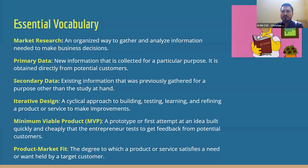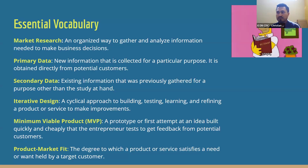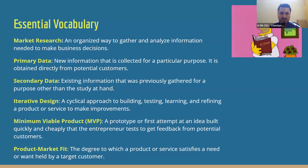First and foremost, market research is really an organized way for you to gather and analyze information so that you can make the best decision for your business. We're going to be covering two sets of data: primary data, which is new information collected for a particular purpose and directly obtained from your potential customers.